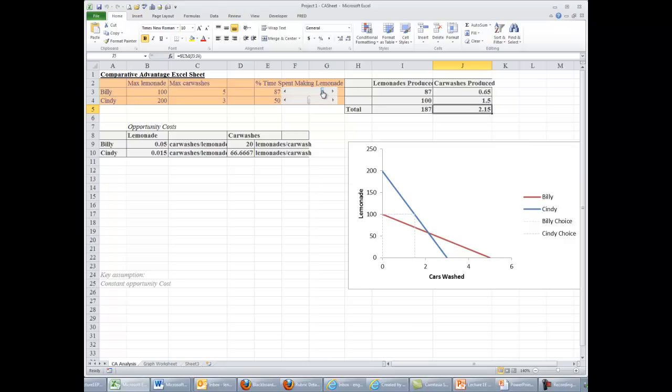Or he could split his time so that he's spending, say, 75% of his time making lemonade, at which point he'd operate right here, producing 75 lemonades and 1.25 car washes. That all being shown right up here in this portion. Or he could spend no time making lemonade, all of his time washing cars, at which point he would operate way down here at this point. And so all of these are different possibilities following along that production possibility frontier.